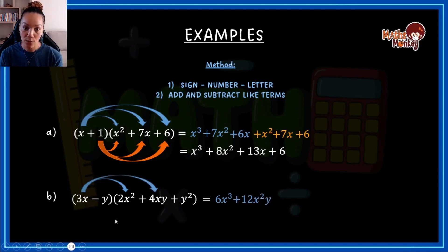Do the same for the second one. So this now will give me positive times positive is positive. 3 times 4 is 12. x times x is x squared. And then I have a y there. Then 3x times y squared is, again, sign number letter will give me 3xy squared.